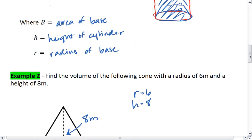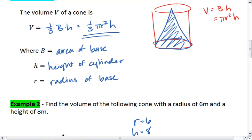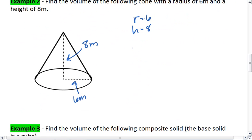I can look above, use my formula one-third pi r squared h. This gives me one-third pi times 6 squared times height, which is 8.